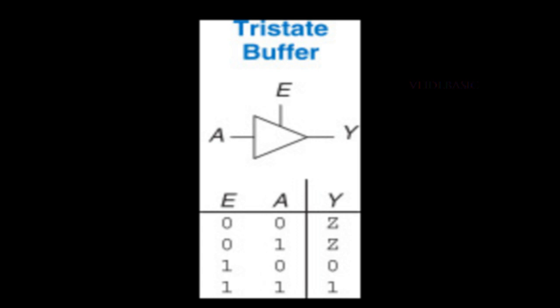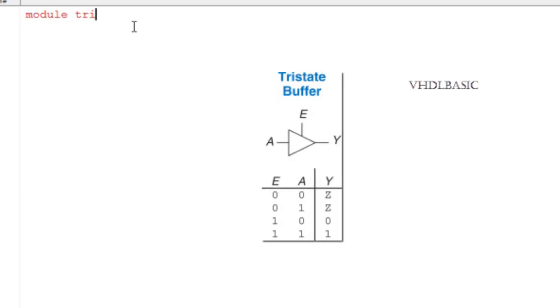Now we are going to see how to implement this using Verilog. Initially we need to declare the module name tri-state buffer and declare the input and output ports. In the tri-state buffer there are two inputs, A and enable, and the output is Y.